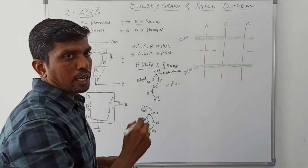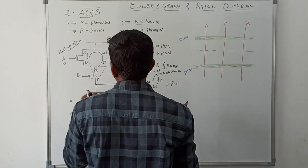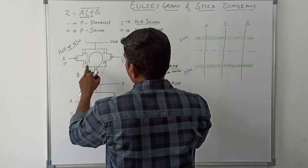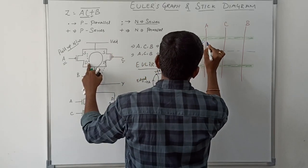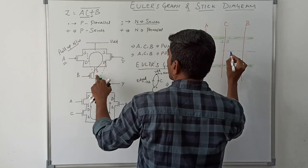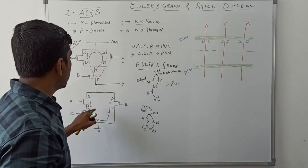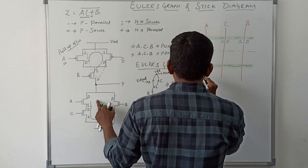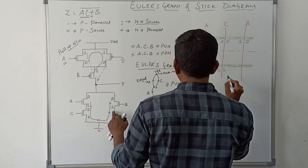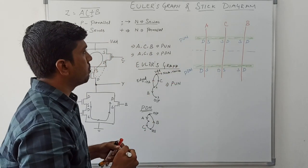The pull-down network consists of NMOS transistors. Now I assign the source and drain terminals for these three transistors. Taking A, C, and B — starting from drain: this portion is the drain terminal and this one is the source terminal. Then source and drain are assigned. Similarly I assign source and drain for the pull-down network: drain, source, then drain, source, then source, drain.